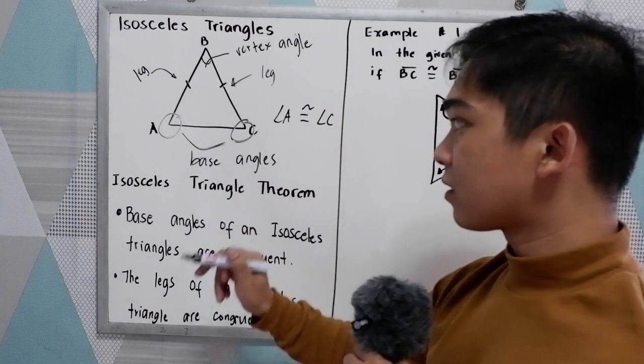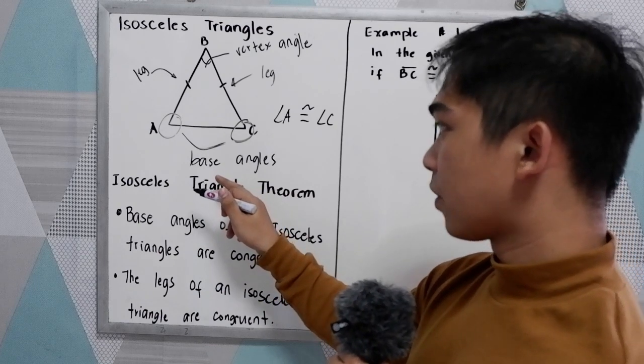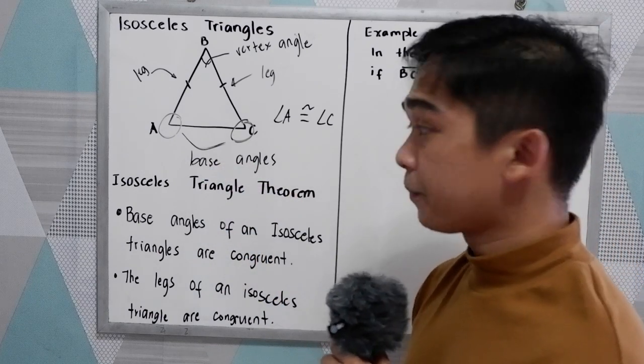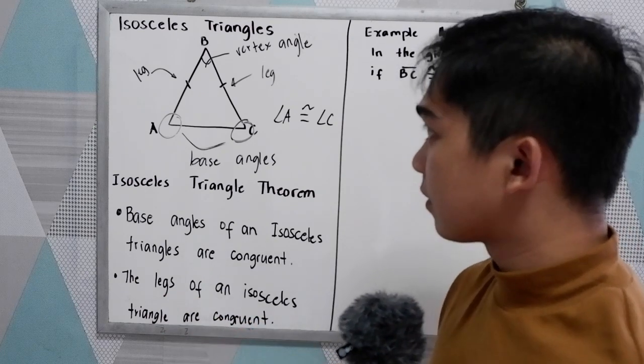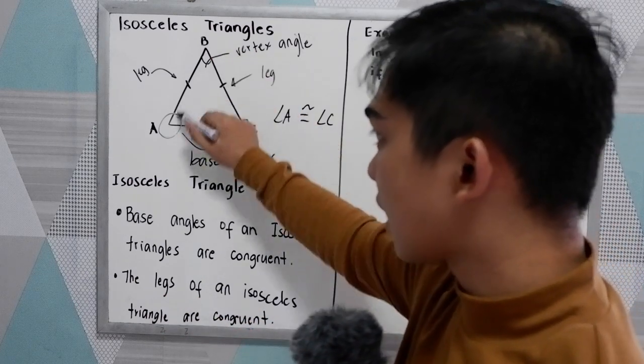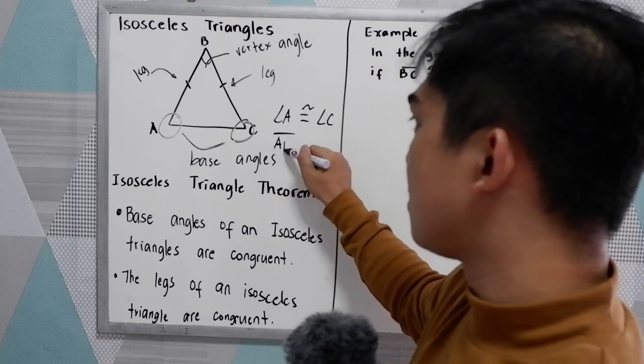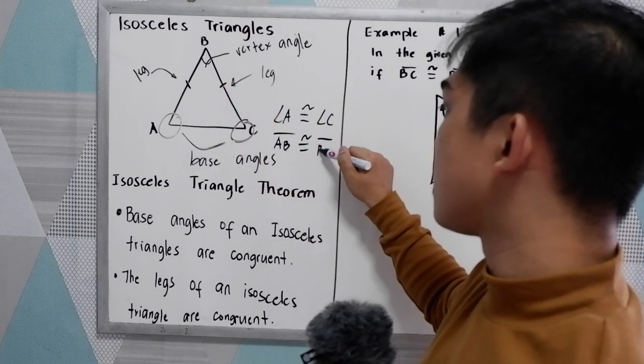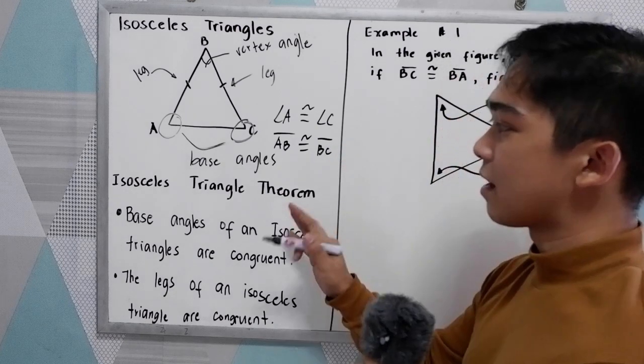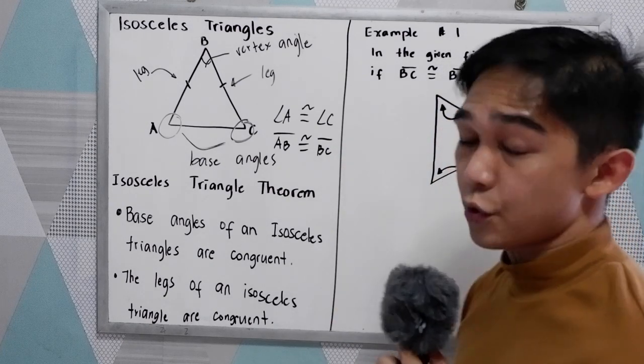Because the two angles are our base angles. And the legs of an isosceles triangle are congruent. That means, in this case, segment AB is congruent to segment BC. That is our theorem. Isosceles triangle theorem.